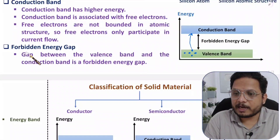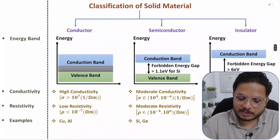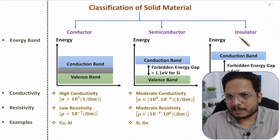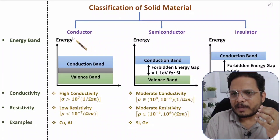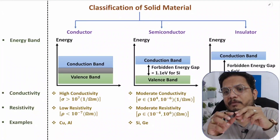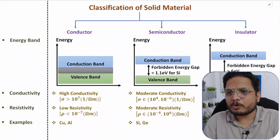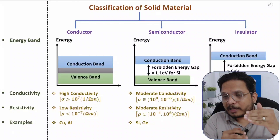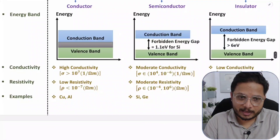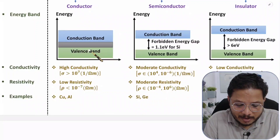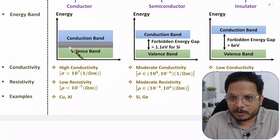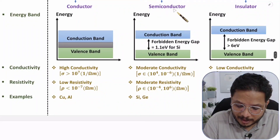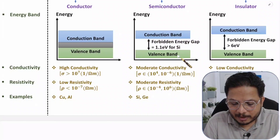Now let me explain the classification of solid materials. In a conductor we have higher conductivity, meaning current flows easily. In a semiconductor you need to give more energy for current to flow, while in an insulator it is difficult to flow current because the forbidden energy gap is very high. In a conductor, the conduction band and valence band are overlapped, so current flows easily by applying potential difference. In a semiconductor, the forbidden energy gap between the conduction band and valence band is relatively low.